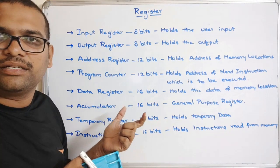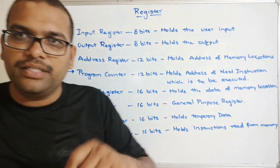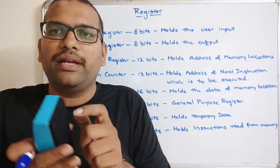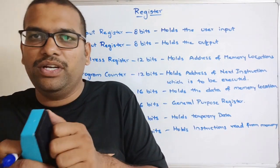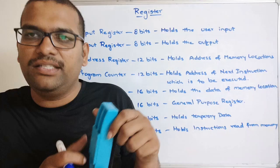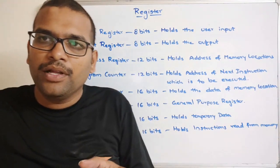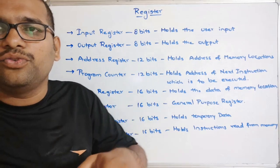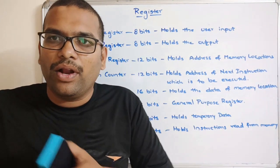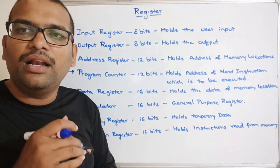These are all the commonly used processor registers: input, output, address, program counter, data register, accumulator, temporary register, and instruction register. A register is a small amount of memory used to store data, used by the CPU for quick access. Their sizes are in bits: 8 bits, 12 bits, and 16 bits.